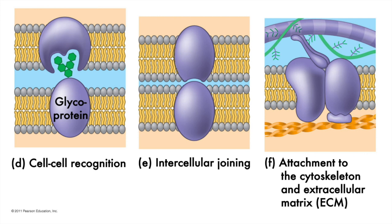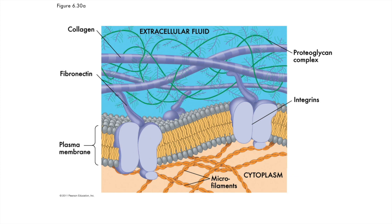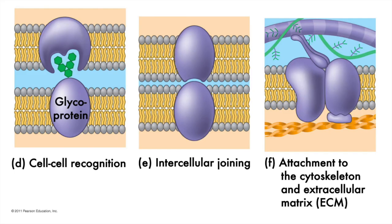We saw a bigger view of this slide just a short time ago. Those orange twisty deals and the purple stuff outside are actin filaments, fibronectin, collagen, and proteoglycans. These integrins that we saw in chapter 6 are like the studs in the walls of our houses that we can anchor things to, like our giant TVs and basketball hoops. That finishes our talk on the six functions of membrane proteins.